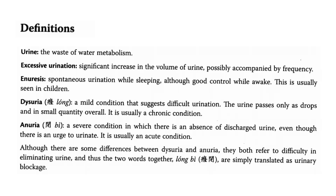Dysuria is a mild condition that suggests difficult urination — the urine passes only as drops and in small quantity overall, and it is usually a chronic condition. Anuria is a severe condition in which there is an absence of discharged urine even though there is an urge to urinate, and it is usually an acute condition.